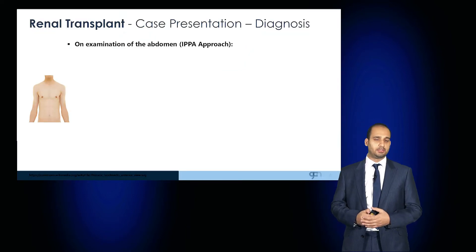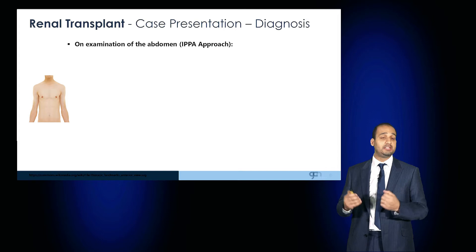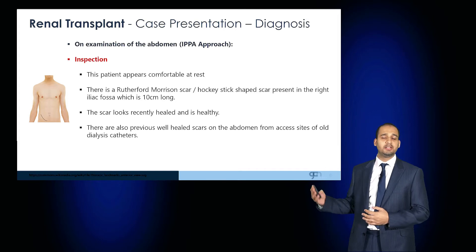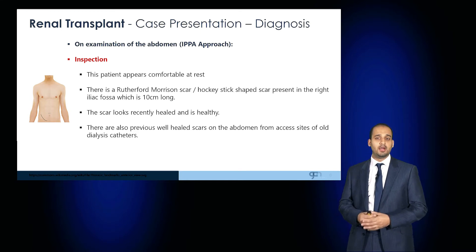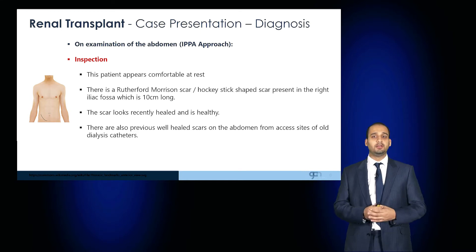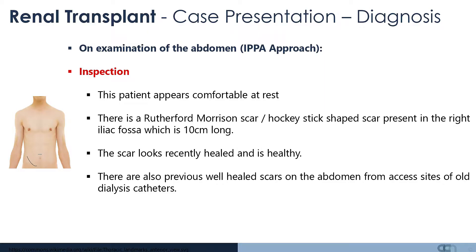If you were to examine a patient, comment on the features that you would expect. On inspection, the patient should appear comfortable. You would note a Rutherford-Morrison scar, or a hockey stick scar, noted in the right or left iliac fossa. Comment on the size of the scar and whether the scar appears recent, old, or whether it appears healthy. Note any other previous scars on the abdomen from previous access sites or dialysis catheters.